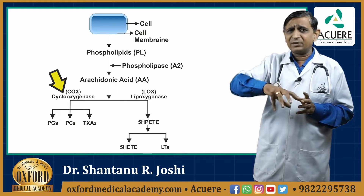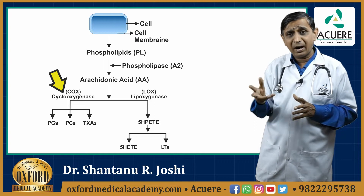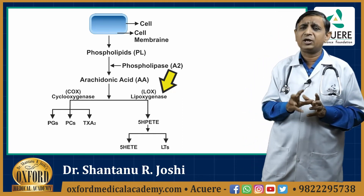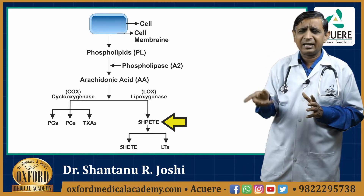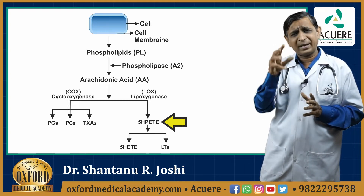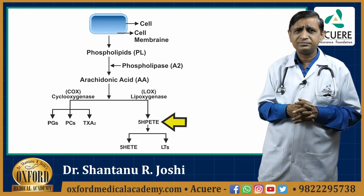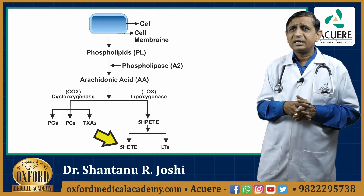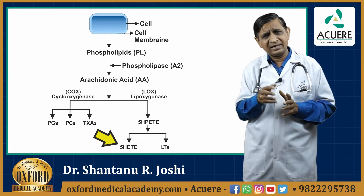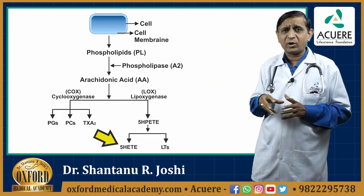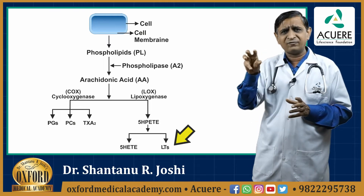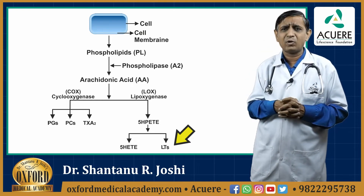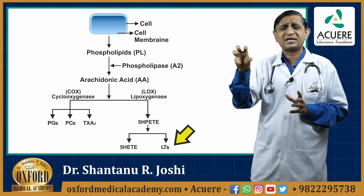Arachidonic acid can also be converted into different metabolites by the lipoxygenase pathway, the LOX pathway. The LOX pathway initially gives you 5-HPETE, known as 5-hydroxy-peroxy-eicosatetraenoic acid, which is further converted into 5-HETE, 5-hydroxy-eicosatetraenoic acid. 5-HETE is one metabolite, and another important group of metabolites is leukotrienes, or LTs. Leukotrienes are very important because asthma is due to this type of leukotrienes.